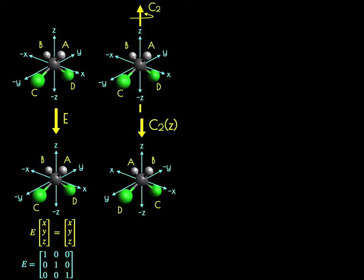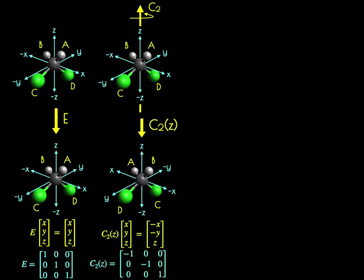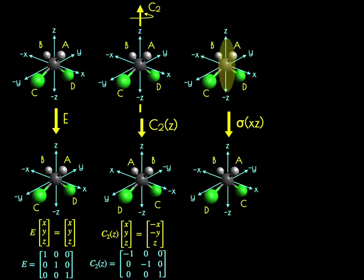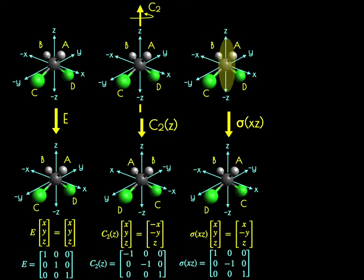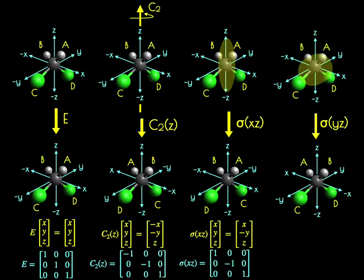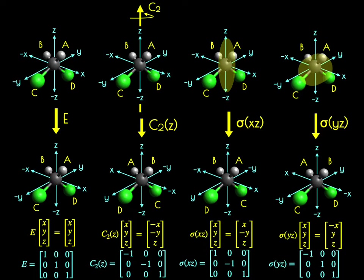For C2 along Z, X goes to negative X, Y goes to negative Y, and Z stays the same, giving the C2Z matrix with entries −1, 0, 0; 0, −1, 0; 0, 0, 1, whose dot product on the XYZ vector yields (−X, −Y, Z). For sigma XZ, X and Z stay the same but Y becomes negative Y. For sigma YZ, X becomes negative X while Y and Z remain unchanged, so its dot product on XYZ yields (−X, Y, Z).